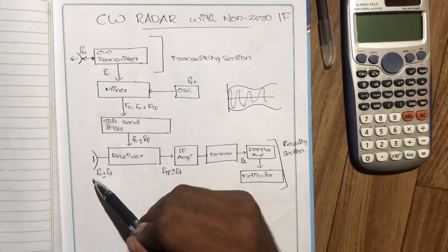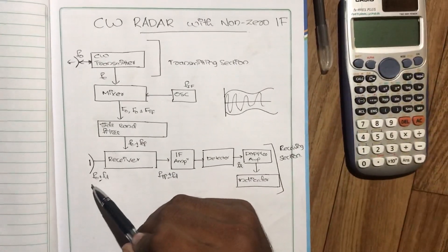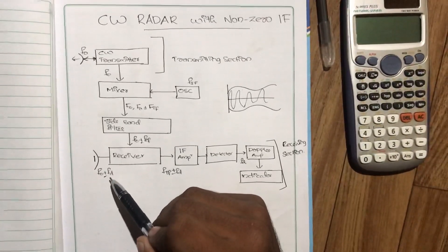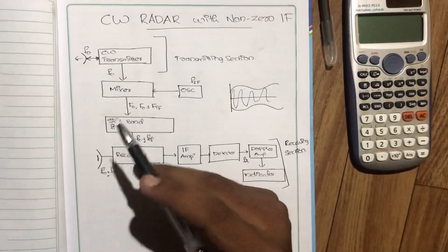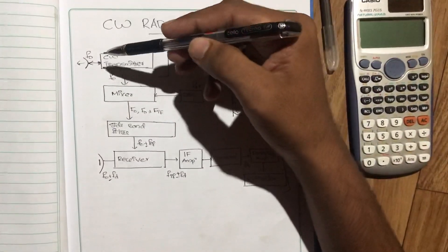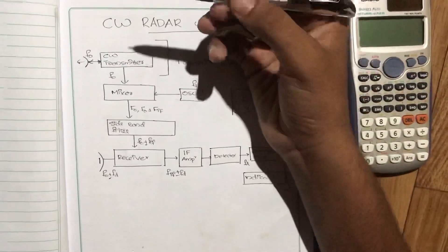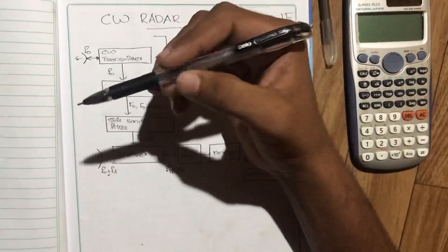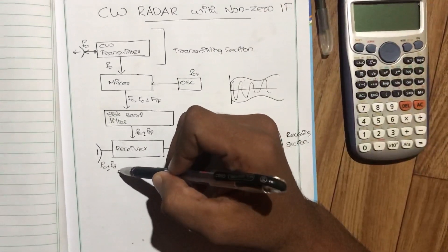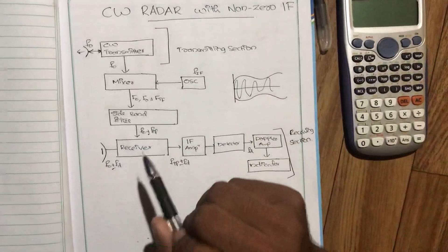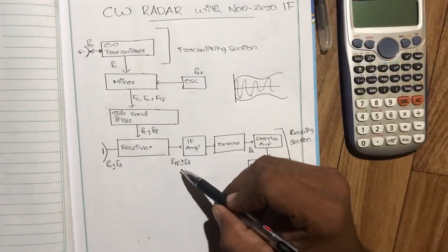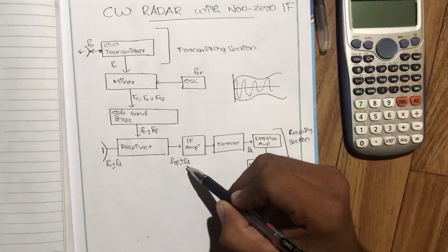We have a receiving antenna. This is F0, so the volume is the Doppler shift. We have a sender. This is F0. F0 is the moving target with Fd. If we compare these two, we can get FIF plus or minus Fd.